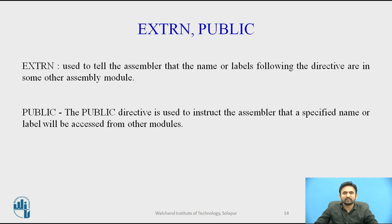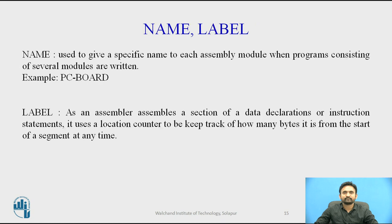The PUBLIC directive is used to instruct the assembler that a specified name or label will be accessed from other modules. NAME is used to give a specific name to each assembly module when a program consists of several modules. LABEL is an assembler directive used for assembling a section of a data declaration or instruction statements.